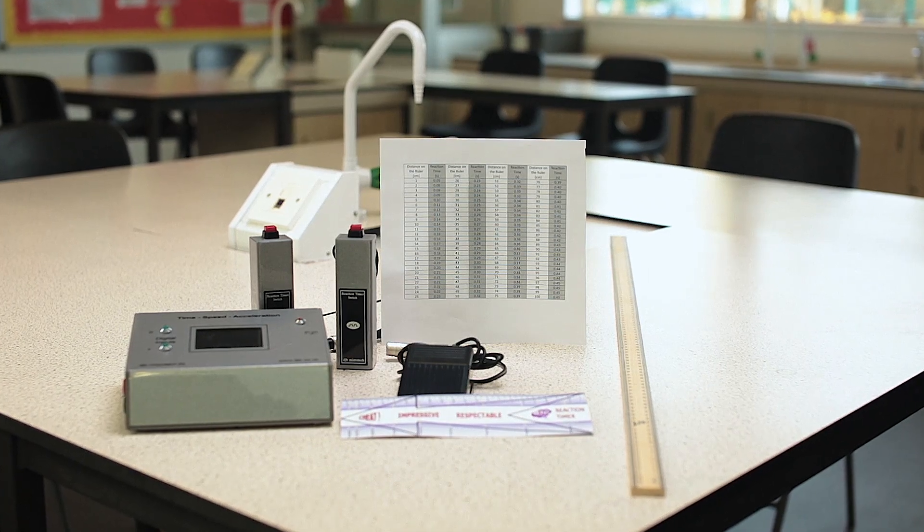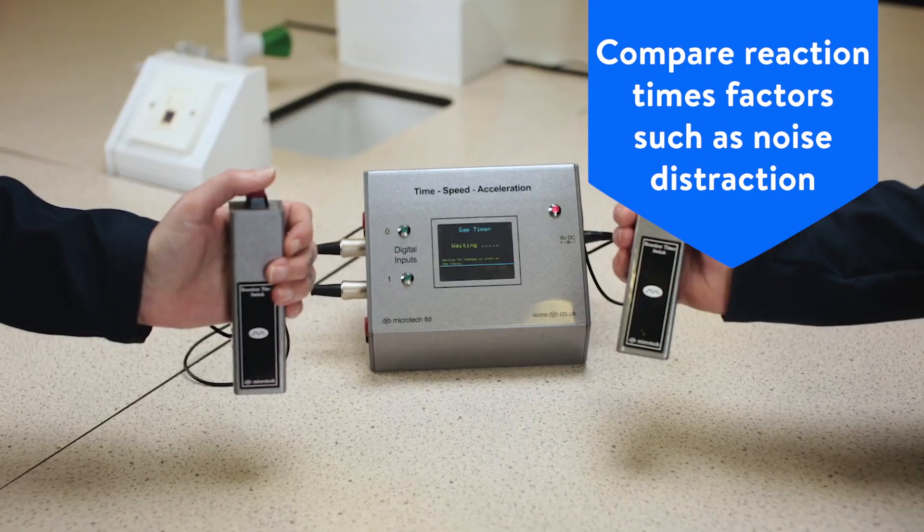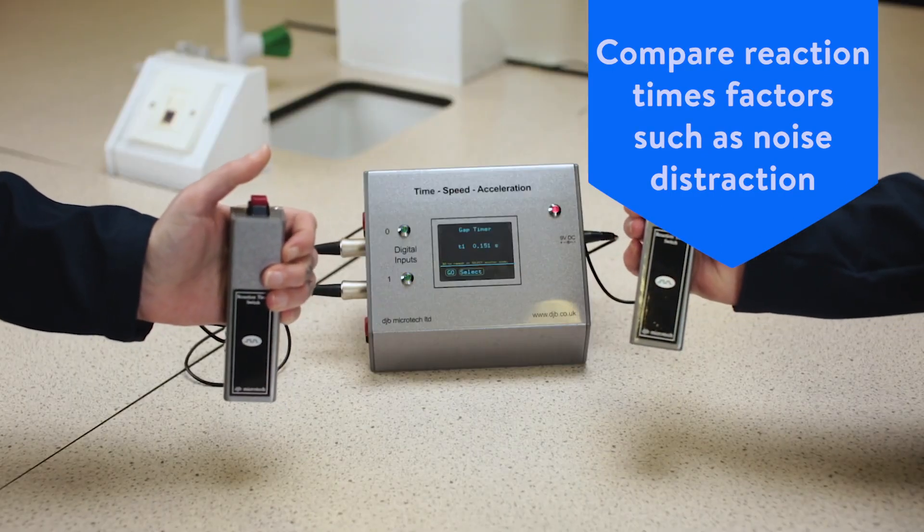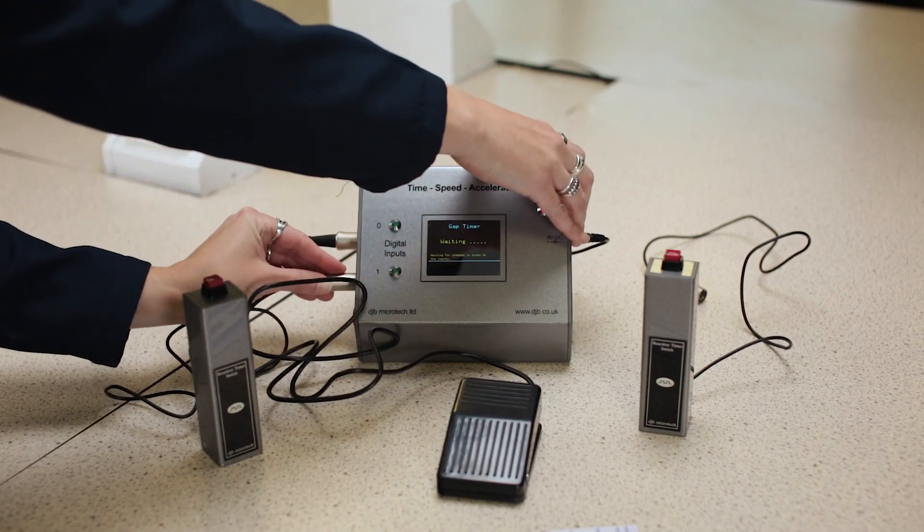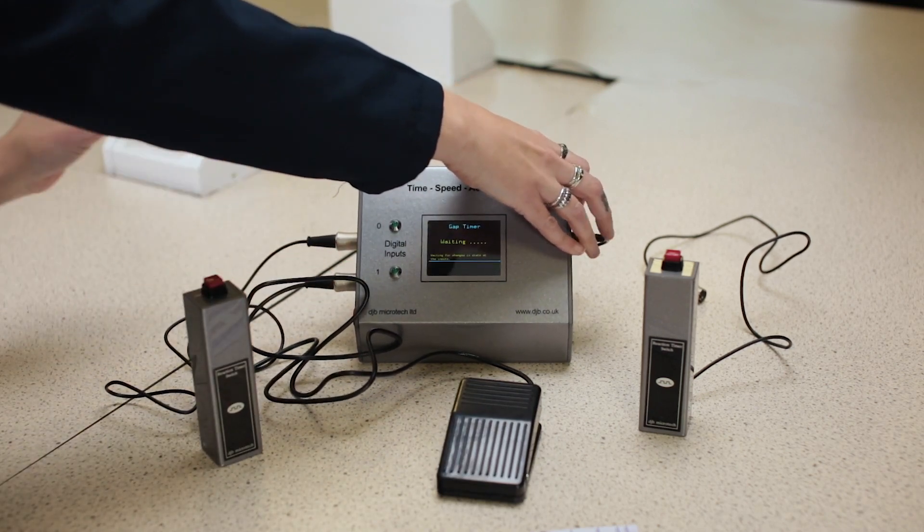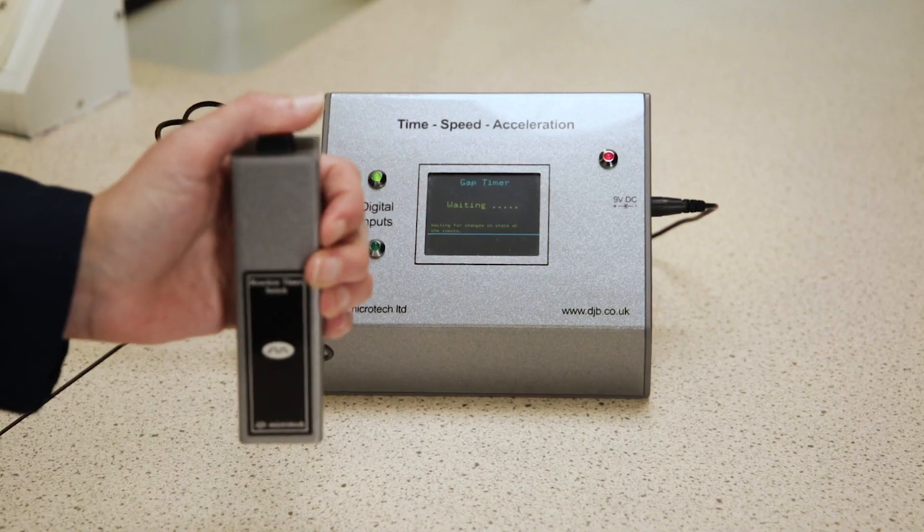There are many other ways to investigate human reaction times. Noise distractions could be used to see how that affects reaction time. Also, drinking a caffeinated versus decaffeinated drink before and after testing to show the effects of caffeine. Students could also investigate the difference in reaction times between their dominant hand and their weaker hand.